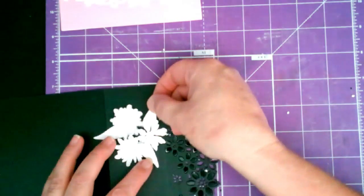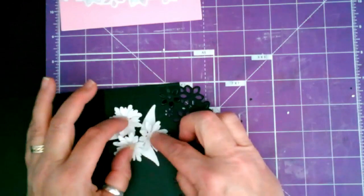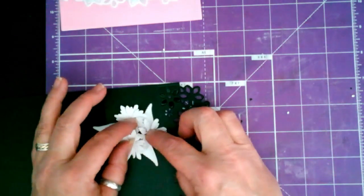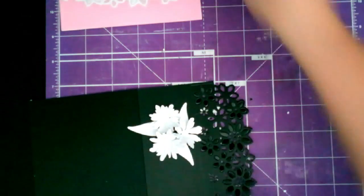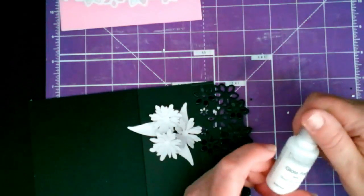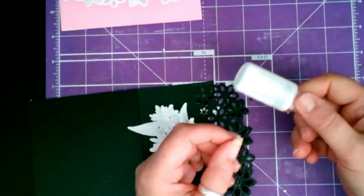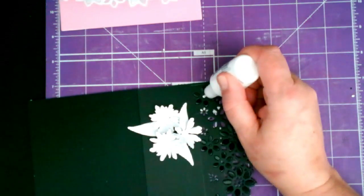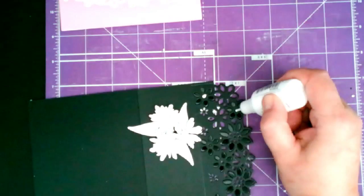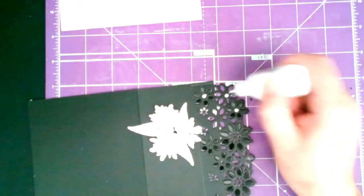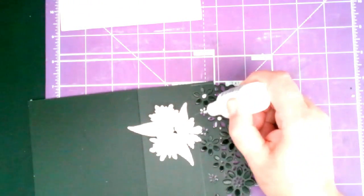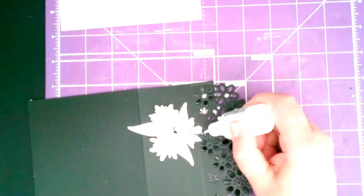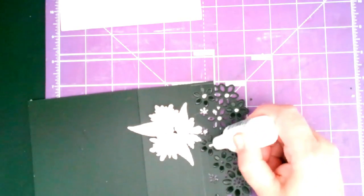Right, so then I'm getting some of this Dual Craft white. And what I'm going to do is put it in between these flowers. You only need a little bit. Like so.